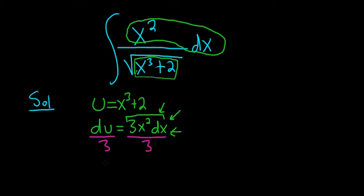We can write this left-hand side as 1/3 du. The threes cancel, and we end up with x²dx. Now we're in a good place and can actually make our substitution.